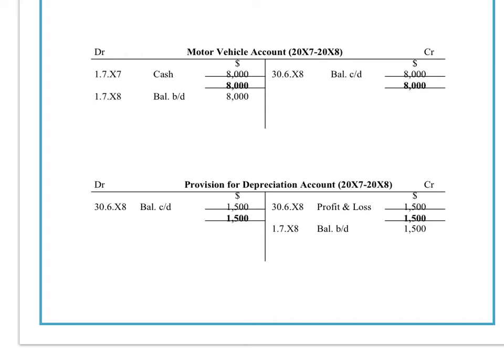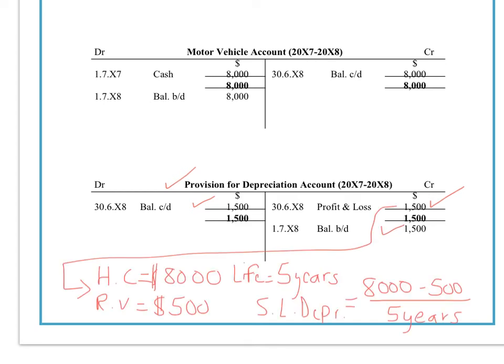The annual depreciation would be calculated using the straight line method, which is much easier because it's always the same amount each year. In this case, the depreciation would be £1,500, and that would go onto the debit side of the profit and loss account and be credited in the provision for depreciation account. At the end of the financial year on the 30th of June X8, we have a balance carried down and brought down of £1,500. This annual £1,500 depreciation, being the straight line method, will remain the same over the five years.